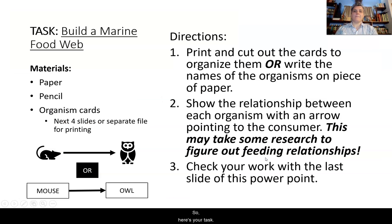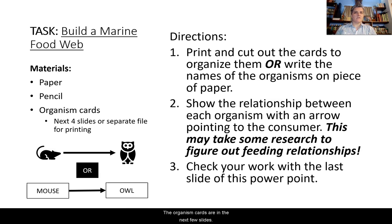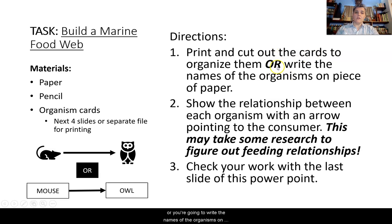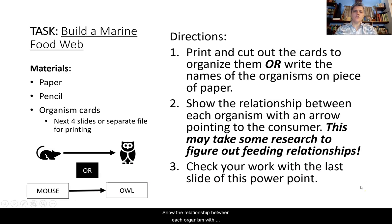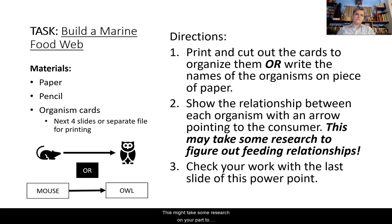So here's your task. The materials that you're going to need are paper, pencil, and the organism cards to help you build this marine food web. The organism cards are on the next few slides, and there's also a separate file for printing. You're going to print and cut out the cards to organize them, or you're going to write the names of the organisms on a piece of paper — you can see an example on the bottom corner of the slide here. Show the relationship between each organism with an arrow pointing to the consumer. This might take some research to figure out the feeding relationships of the organisms you're about to be introduced to. Finally, check your work with the very last PowerPoint slide.